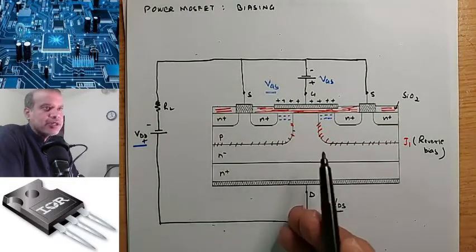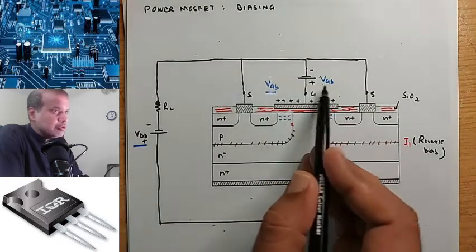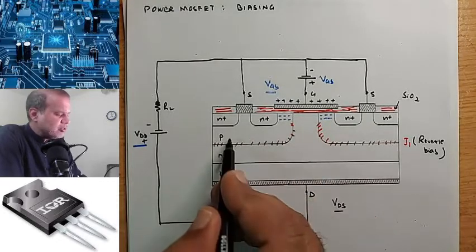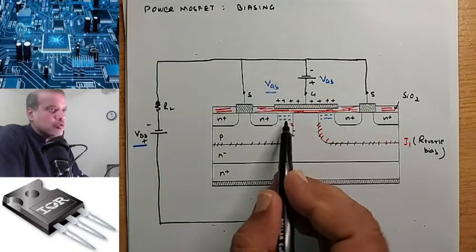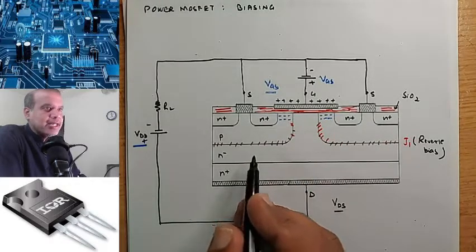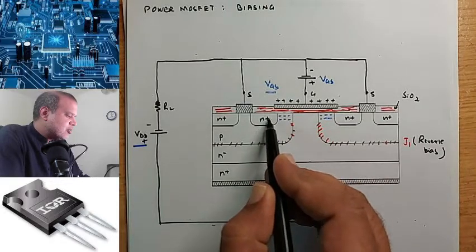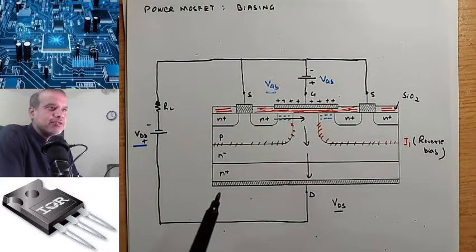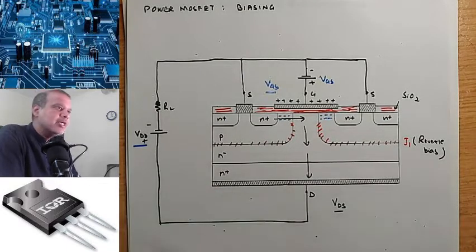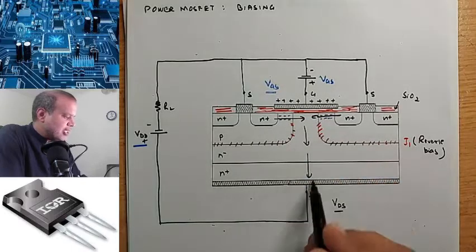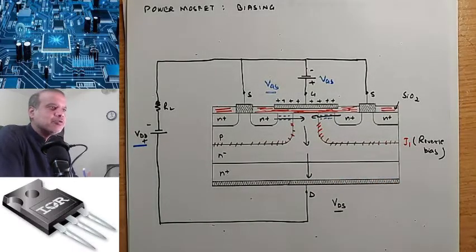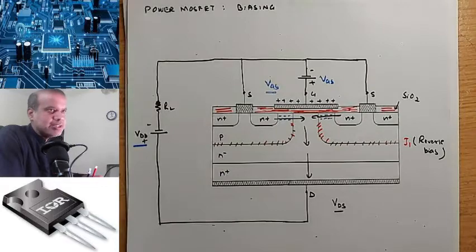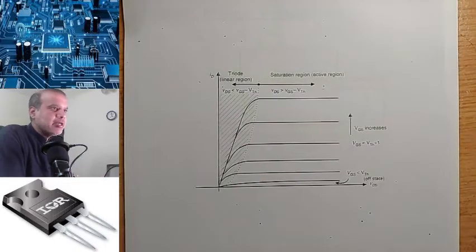There is basically no electrical connection between the drain and source until the gate-to-source voltage is applied and a channel is induced in the P-type body region. When current flows, the electrons will flow through this region and eventually flow towards the drain region.